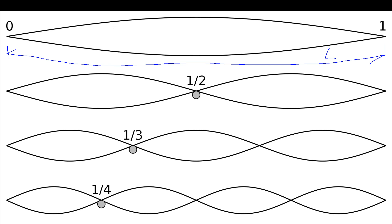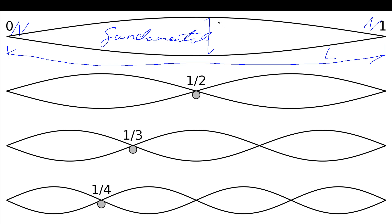In standing wave patterns, we get a series of nodes and anti-nodes. At each end of the string, because it's fixed, we must have no displacement — so each end must be a node. We can't just have two nodes together with nothing in between, as that would be no vibration. So the simplest structure is two nodes at each end and an anti-node dead in the center, giving us this simple shape called the fundamental mode — the lowest frequency, simplest shape.